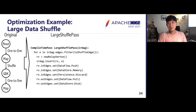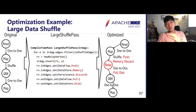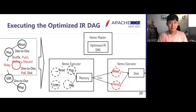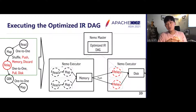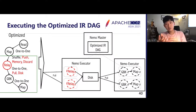How Nemo performs this optimization is very simple and can be done in just a few lines of code. The algorithm seeks for shuffle edges, creates a new relay vertex, inserts it between the shuffle edge, then tags the incoming and outgoing edges of the relay vertex with the appropriate execution properties that distinguish how intermediate data should be transferred to and from the relay vertex. Once the pass is applied, our sanity checker confirms that both IR DAGs produce equivalent final outputs. The Nemo master then distributes and schedules tasks so the read and map tasks run in a pipeline manner, pushing outputs to the relay task which writes intermediate data to disk sequentially.